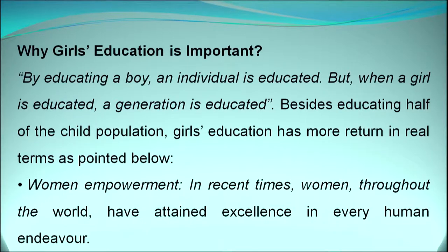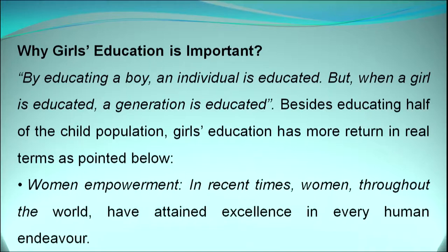As you know, the girl child later on gets married in the future and goes to another family. So she basically educates two families — her maternal family and then her in-laws' family. And she can also teach or educate her own children if she is well educated; she can help them. Beside educating half of the child population, girls' education has more returns in real terms.